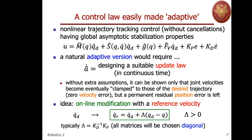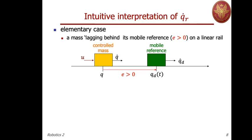The idea of this modification can be illustrated with a simple example, and has a profound motivation related to the exploitation of the passivity property of the robot system when torque is input and velocity is output. In the elementary case, the interpretation of the reference velocity is simple: suppose you have a controlled mass that moves on a linear rail and should follow some reference trajectory q-desired of time.